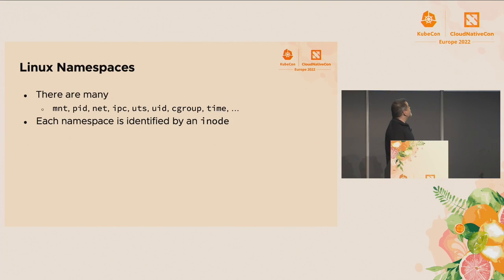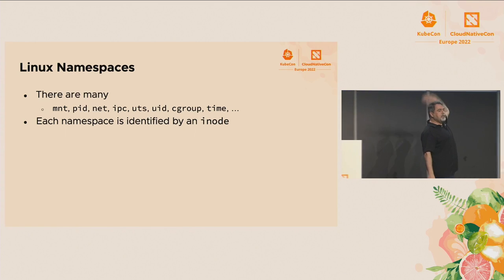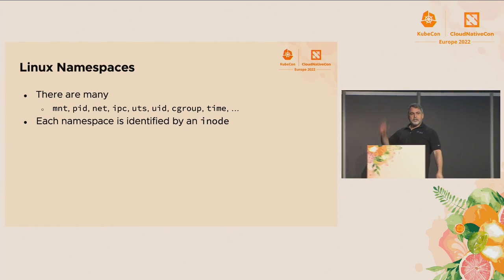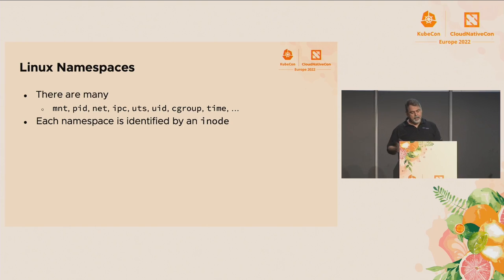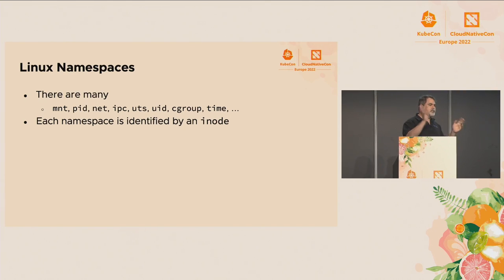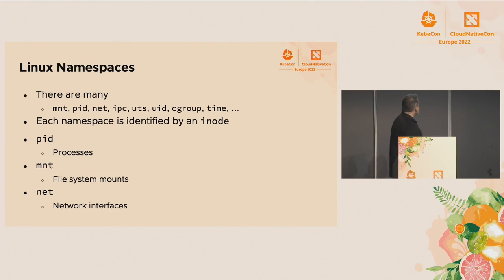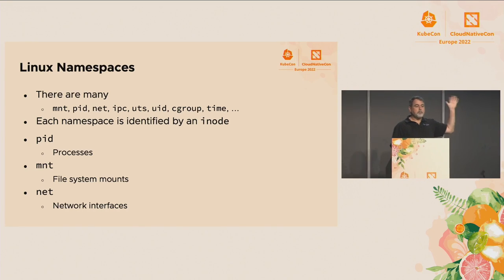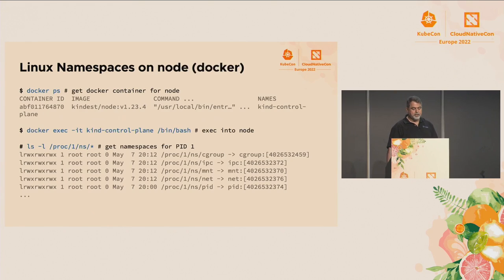There are many Linux namespaces — here are just a few, roughly listed in order of importance: Mount, PID, NET, IPC, and a bunch more. Each namespace is identified by an inode in a virtual file system. I'm going to focus on the PID namespace, the Mount namespace, and the NET namespace, as those are probably the most important ones. There are also some quirks you should know about when you start to play around with these.